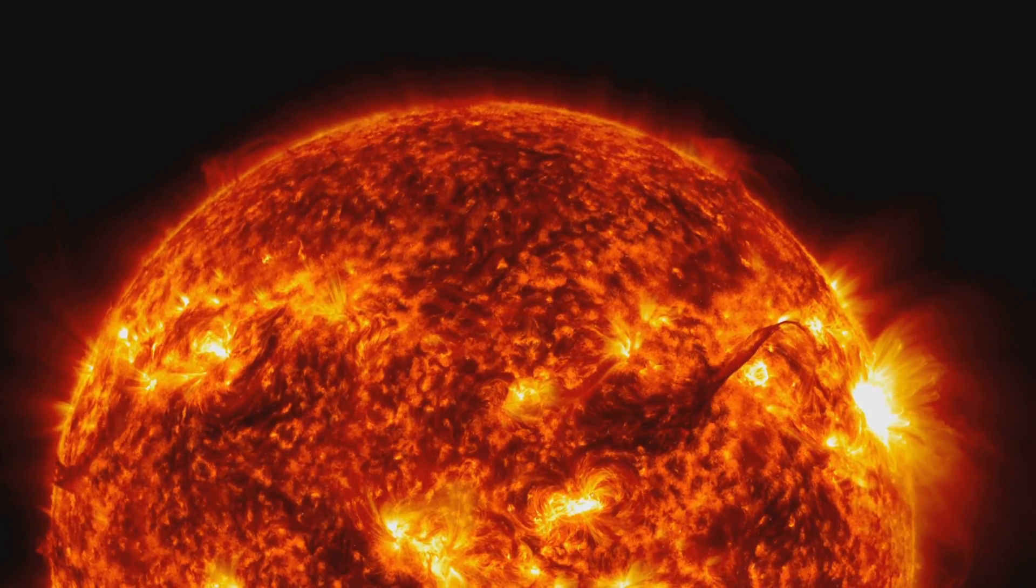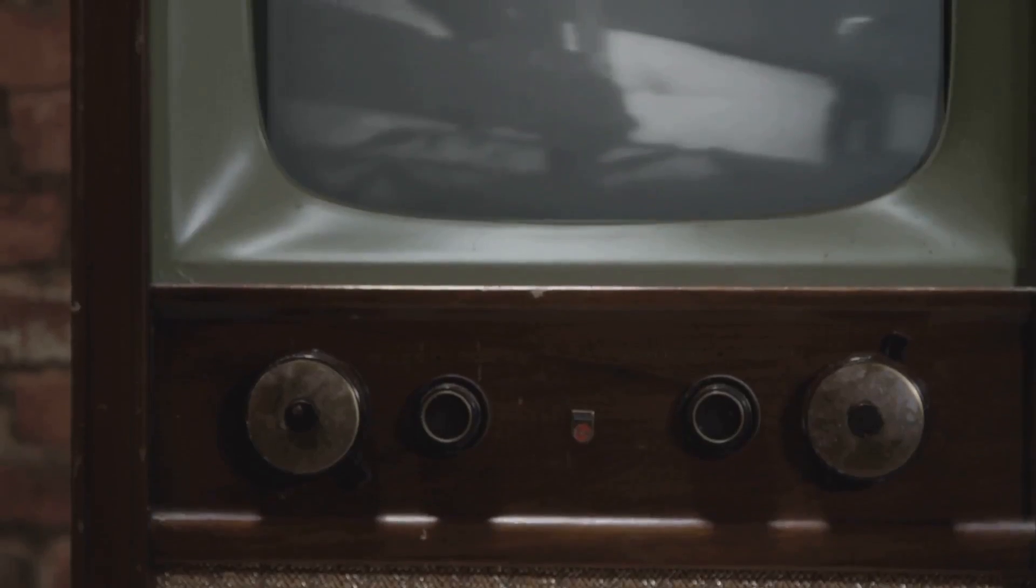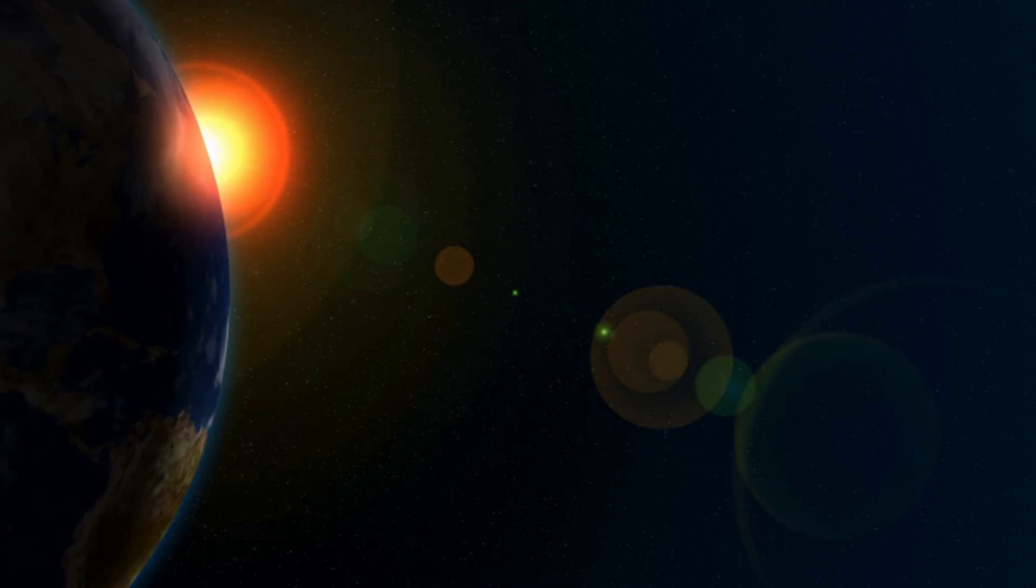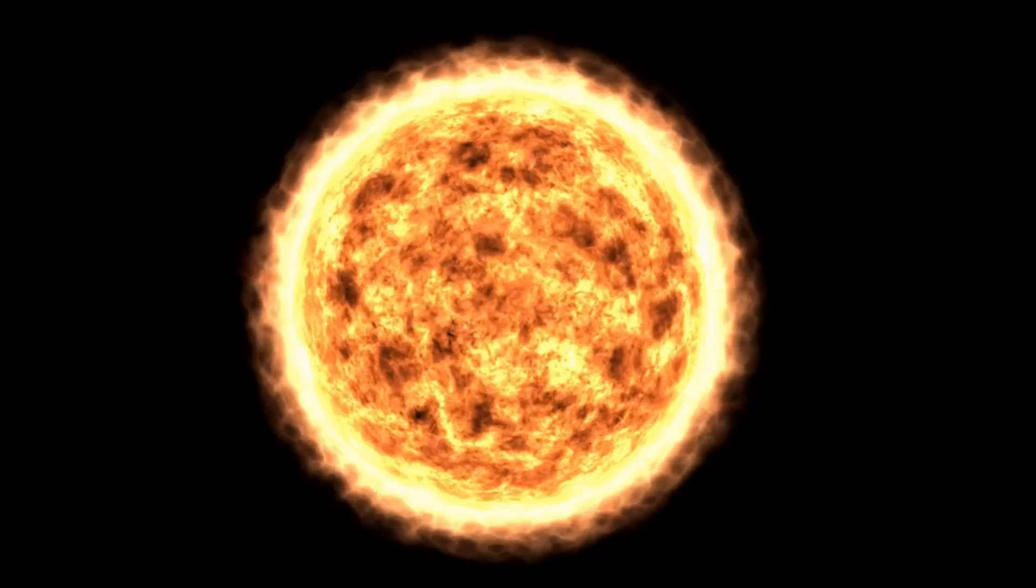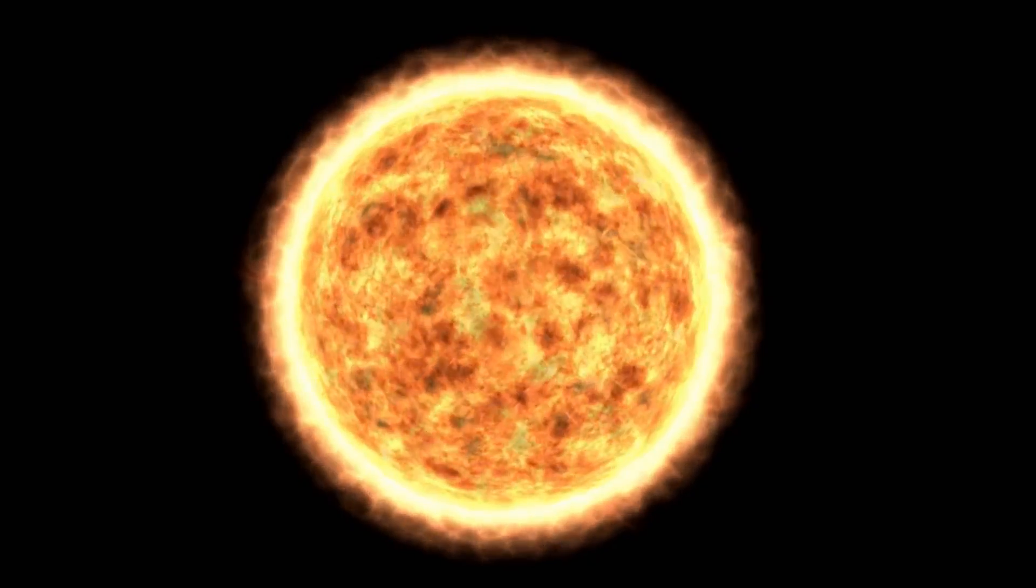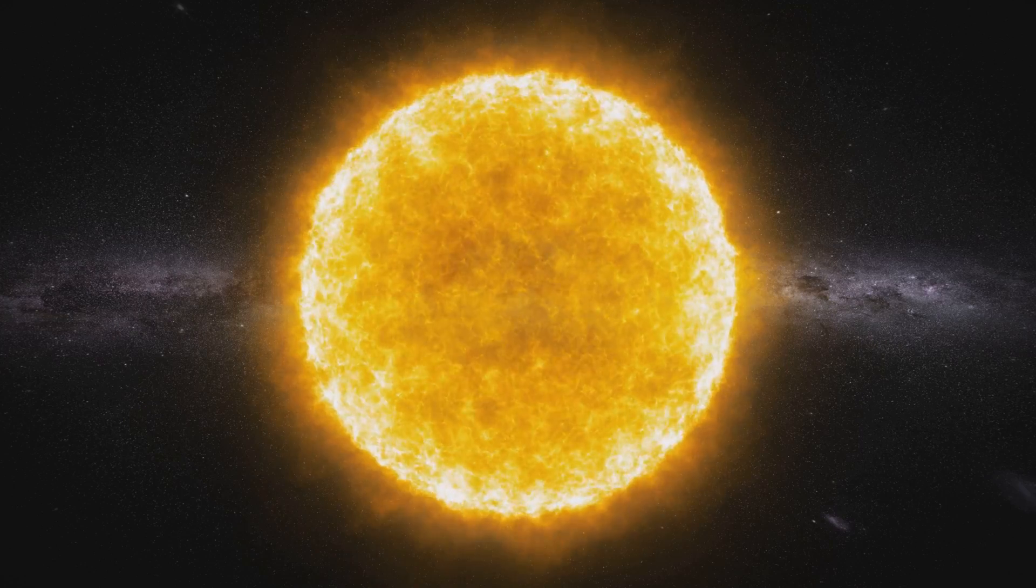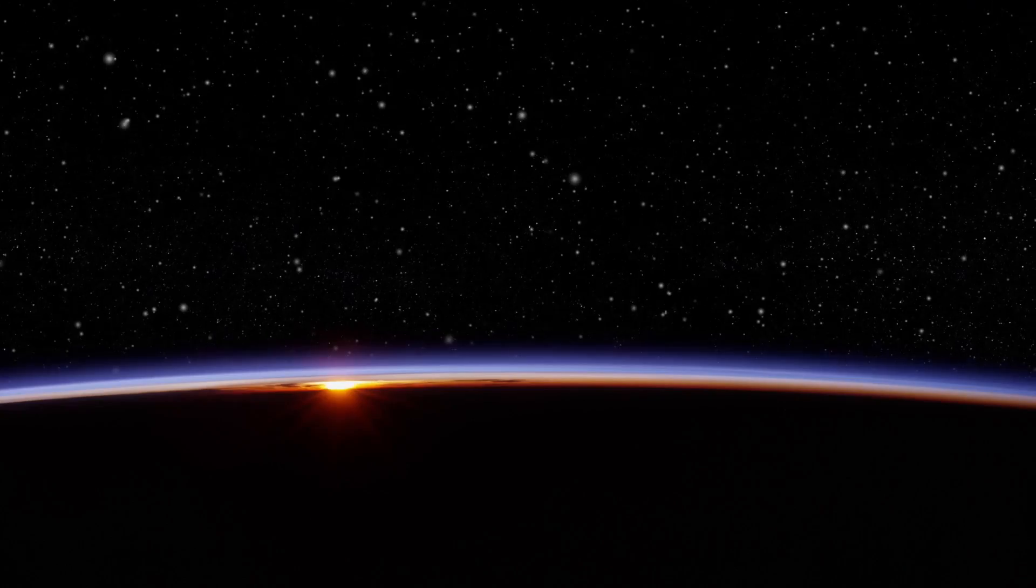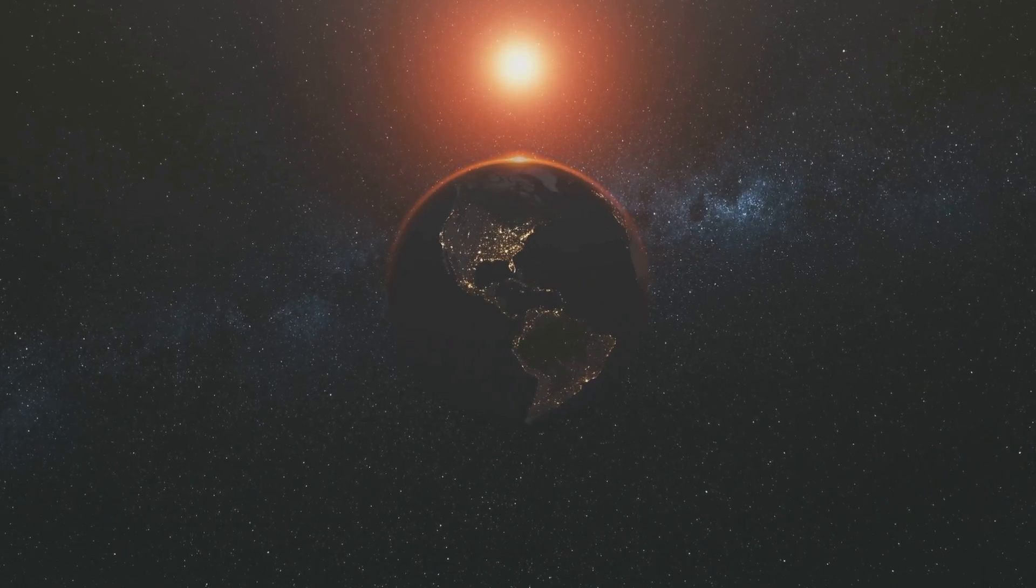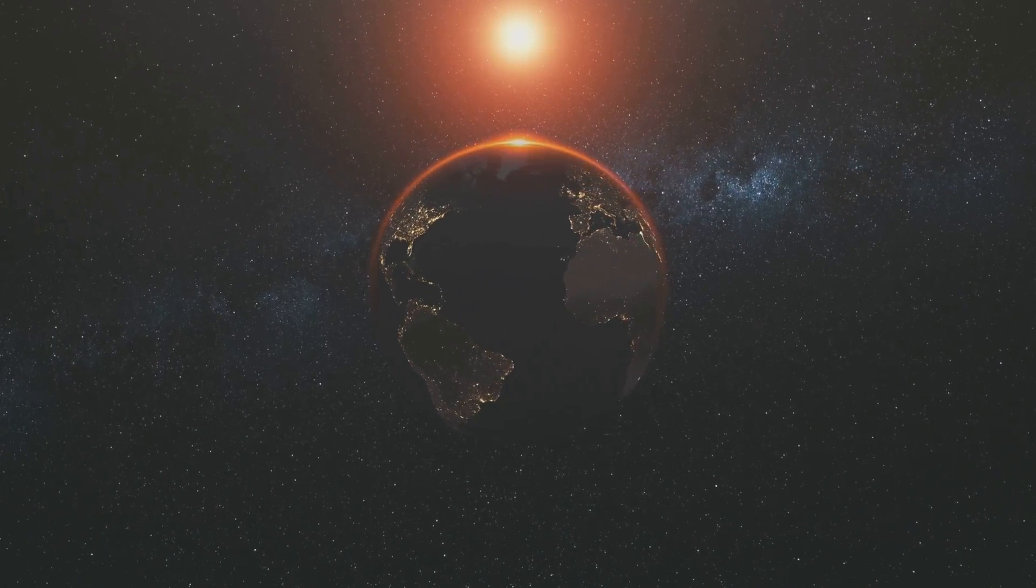Scientists have discovered the sun is gradually getting hotter, a process unfolding over millions and billions of years. This isn't about today's climate change, but the grand story of a star's life. The sun's increasing temperature is a natural part of its evolution, a consequence of the physics that makes it shine.